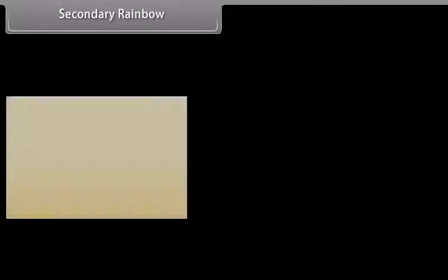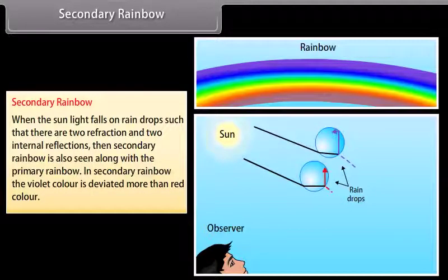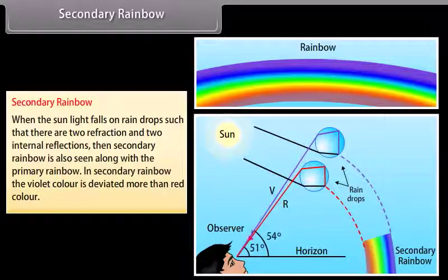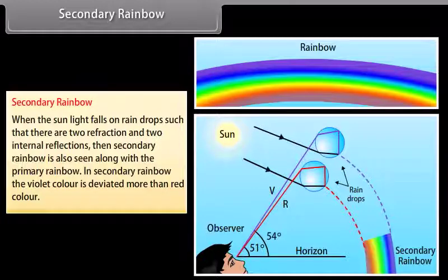Secondary rainbow: When sunlight falls on raindrops such that there are two refractions and two internal reflections, a secondary rainbow is seen along with the primary rainbow. In the secondary rainbow, the violet colour is deviated more than the red colour.